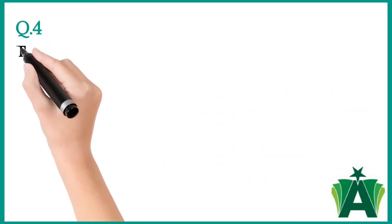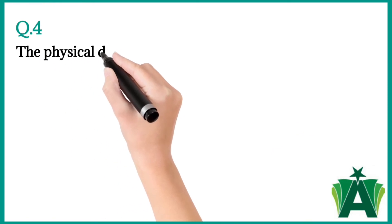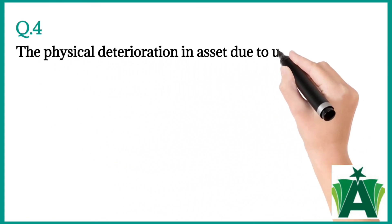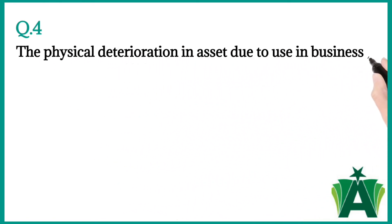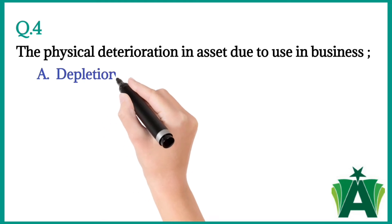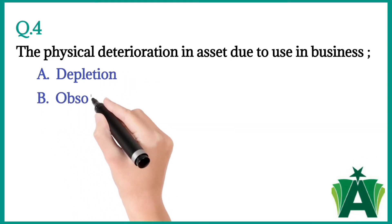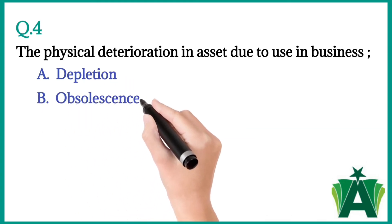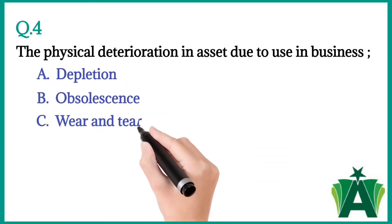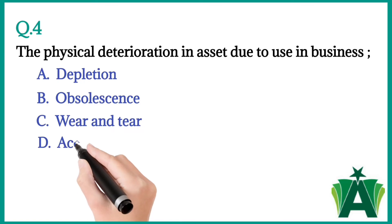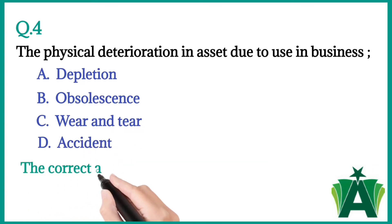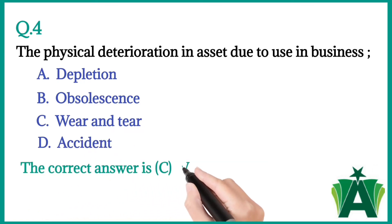Question number four: The physical deterioration in an asset due to use in business — a) depletion, b) obsolescence, c) wear and tear, d) accident. The correct answer is c) wear and tear.